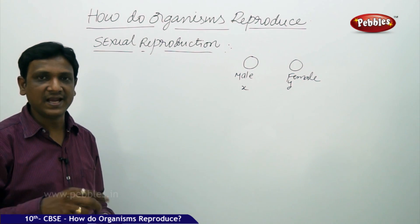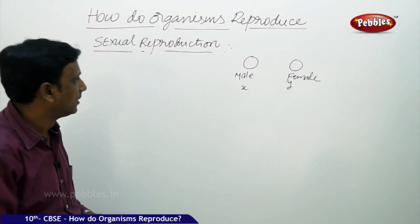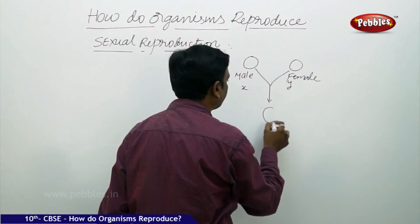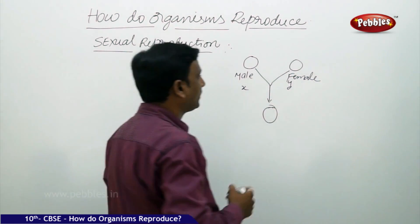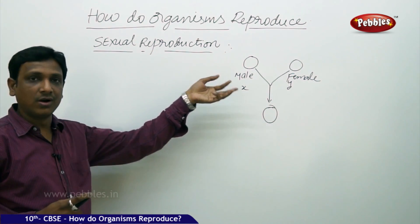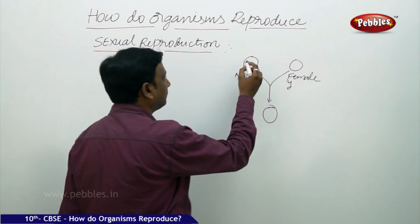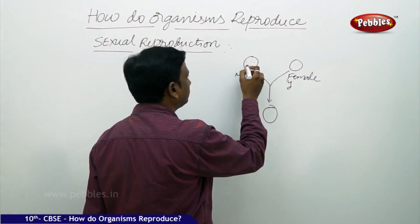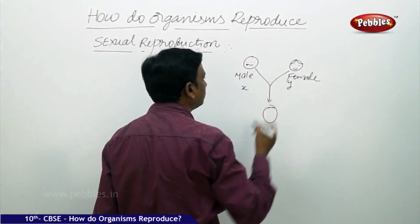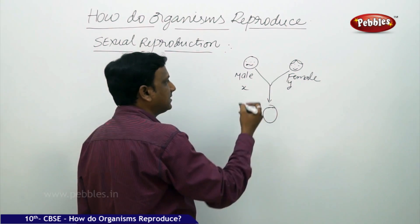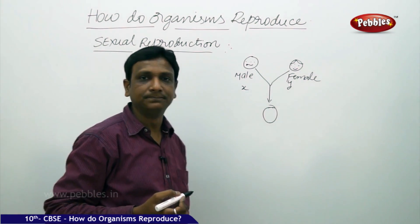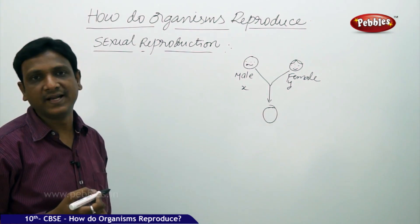Two organisms, one male and one female of the same species, can participate in the process of sexual reproduction to produce a young one of their own kind. But how is this young one? Similar to the parents, but not identical. The young one acquires some characters from the father and some characters from the mother, but is not identical to any one of them.